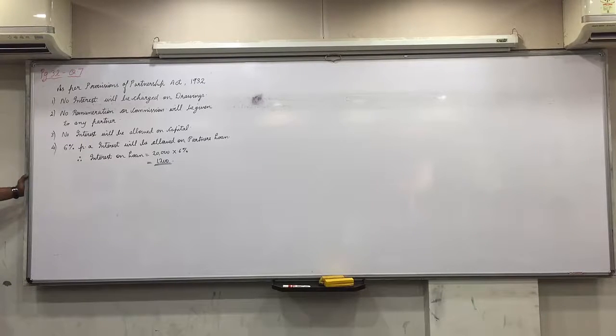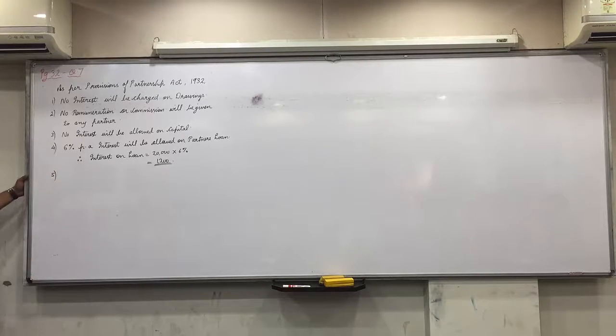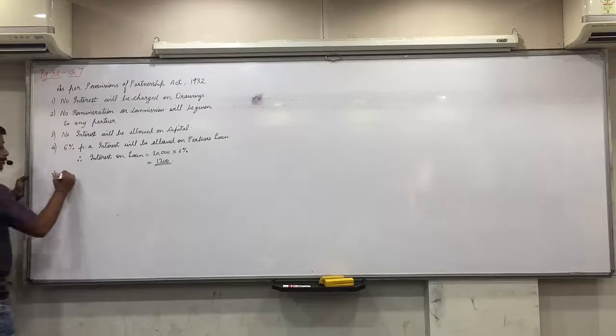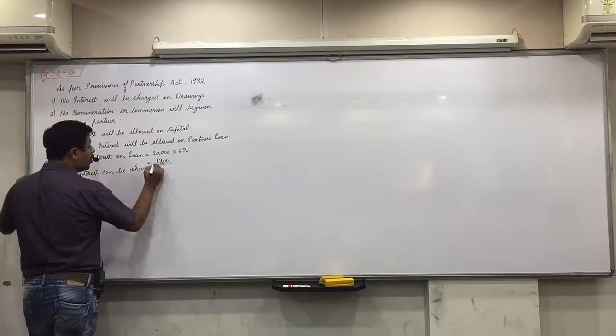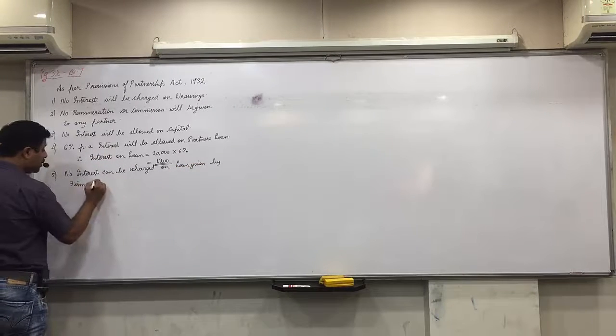And the last one, X demands to share the profits between the partners in proportion of capital. Sorry, if the firm has lent a loan of 35,000 to Y, now who is giving loan to? Firm is giving to the partner. And X demands to charge interest on the loan. No. Cannot be charged. If partner has given to the firm, 6%, but firm has given to the partner, no interest. No interest can be charged on loan given by firm to the partner.